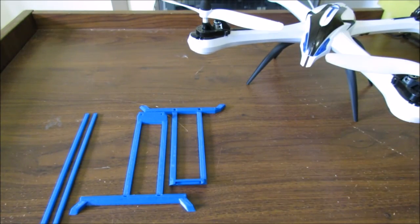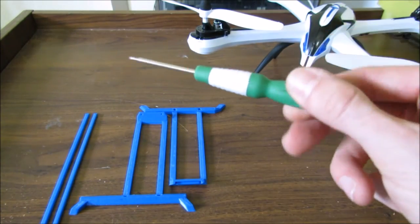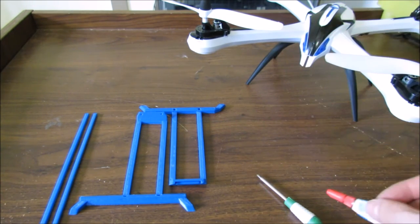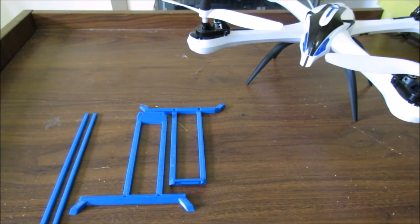To install the new landing gear you will need the screwdriver that came with the Tarantula, a few drops of glue or acetone, and the screws holding on the stock landing gear.